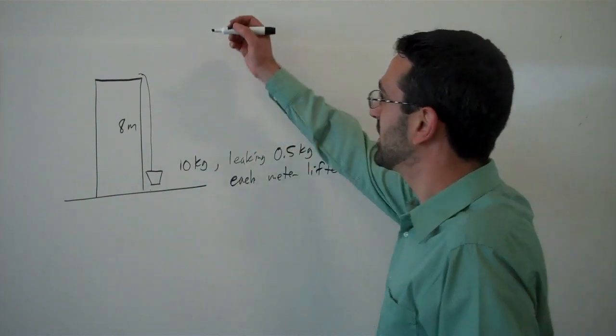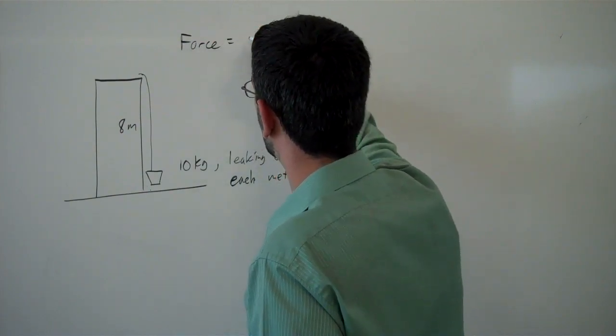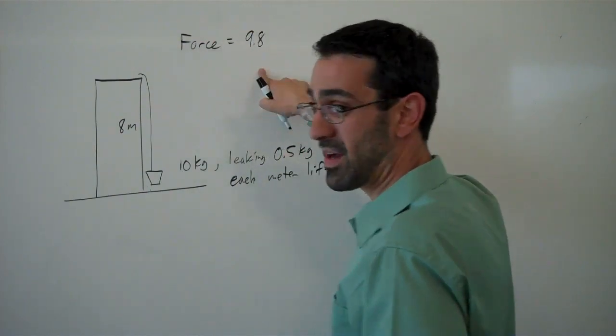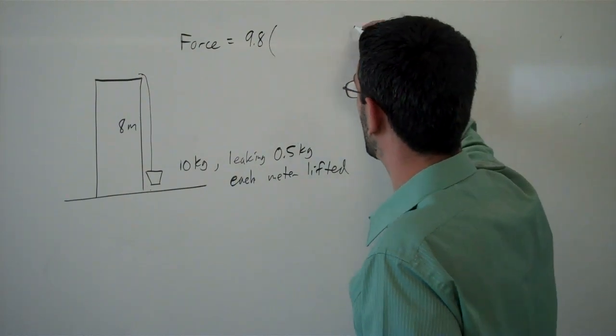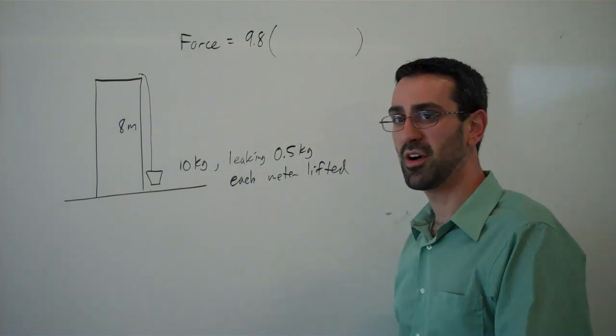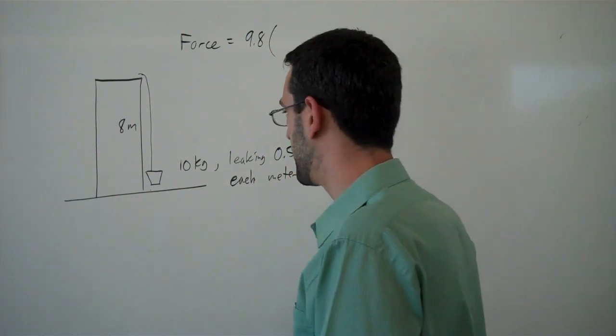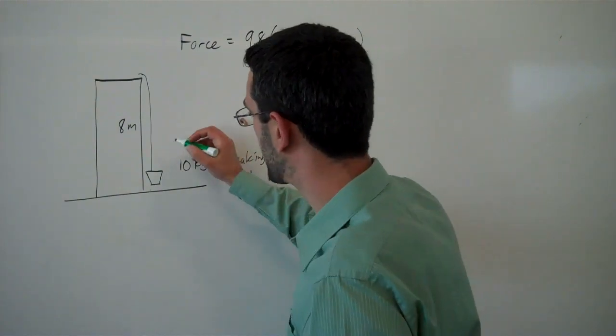So the force here isn't constant. So the force, we've got gravity going on, gravity times the mass. And so the force now is going to depend upon how far we've lifted the bucket. So let's introduce a variable for how far we've lifted the bucket.